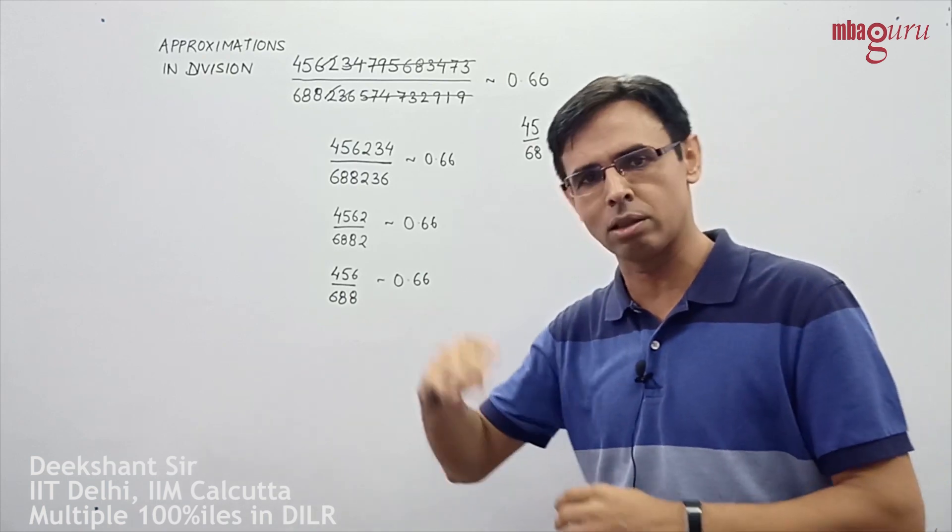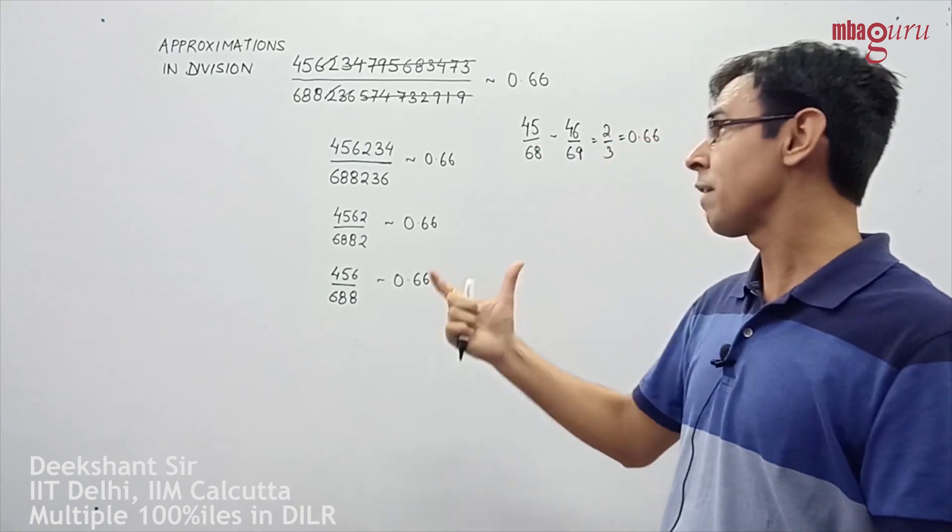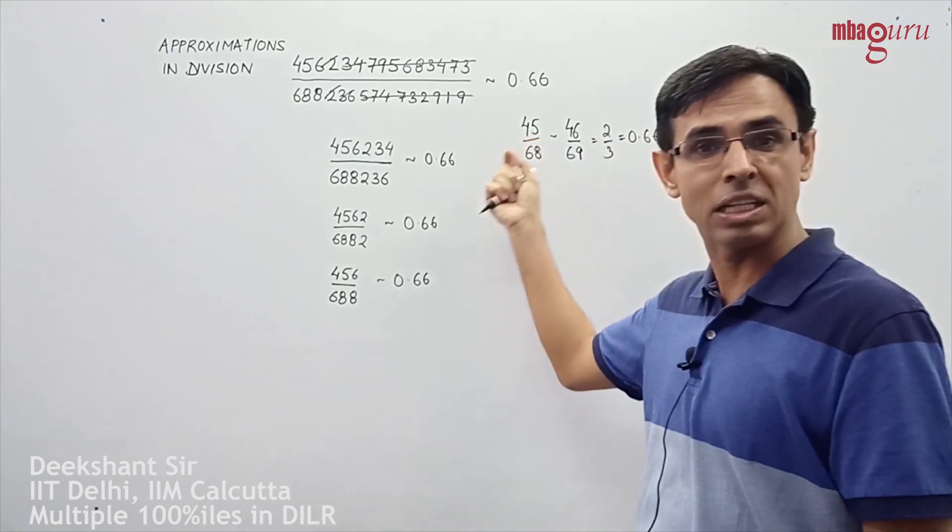You may have some error probably in the third, fourth, fifth place after the decimal. Now this has to do with the weightage that each of these numbers carries.